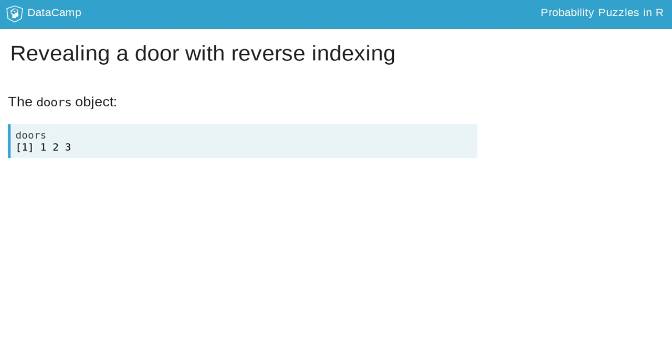Consider the doors object, which contains the values one, two, and three to represent each door. If the contestant chooses door number one and the prize is behind door number two, then the only possible door that the host can reveal is door number three.